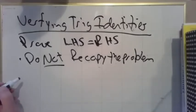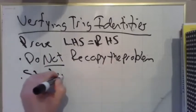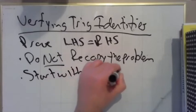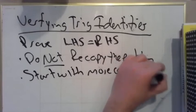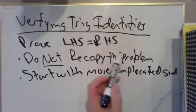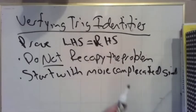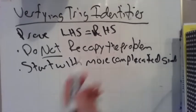My second piece of advice, start with the more complicated side. So one of these sides, the left-hand side or the right-hand side, is going to look uglier than the other one. Mathematically it doesn't matter. You could start with either side, but pick the one that looks the worst. This tends to be the best advice.